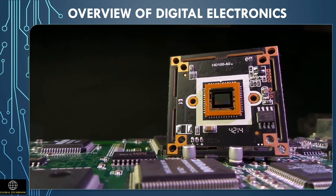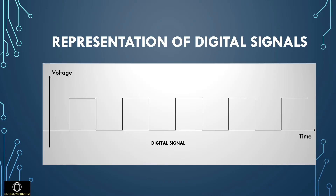Digital electronic circuits are usually made from large assemblies of logic gates, often packaged in integrated circuits. A digital signal is a signal that shows data as a sequence of discrete values, representing the working of digital electronic circuits. In digital system circuits, data values can only be represented by either one or zero. A digital signal has a value of one or zero from a finite set of possible values at a given time. They are commonly known as clock signals or square waves. Their maximum value is 5 volts and their minimum value must be zero volts.